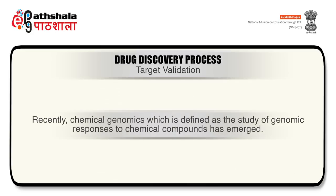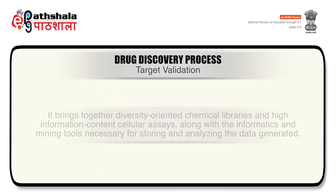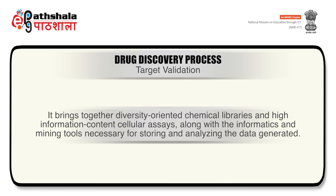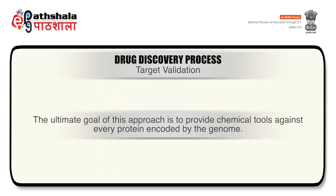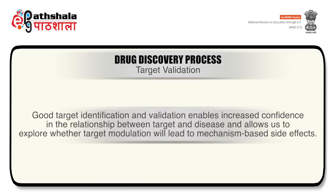Recently, chemical genomics — defined as the study of genomic responses to chemical compounds — has emerged. It brings together diversity-oriented chemical libraries and high information content cellular assays along with informatics and mining tools necessary for storing and analyzing the data generated. The ultimate goal of this approach is to provide chemical tools against every protein encoded by the genome. Good target identification and validation enables increased confidence in the relationship between target and disease, and allows us to explore whether target modulation will lead to mechanism-based side effects.